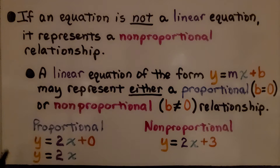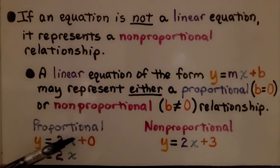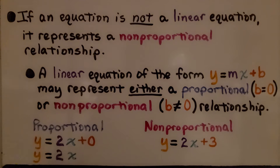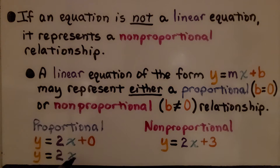Here we have proportional relationships. We have y equals 2x plus zero. Here b equals zero — that is the y-intercept b — which means it's proportional. We can also write it as y equals 2x; we don't need to write the plus zero. That's proportional.